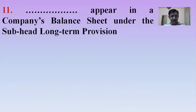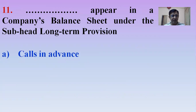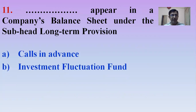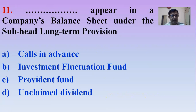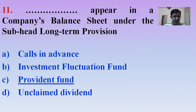Next MCQ: Which item appears in a company's balance sheet under the subhead called Long-term provisions? Options: Calls in advance, Investment fluctuation fund, Provident fund, or Unclaimed dividend. The right answer is Option C — Provident fund, which is a retirement benefit for employees, is classified as a long-term provision.